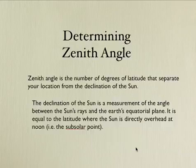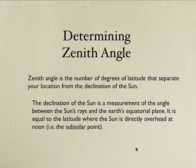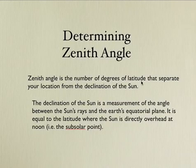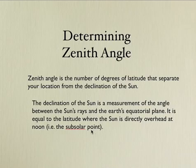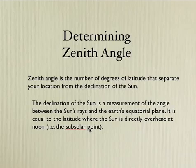We need to determine the zenith angle. The zenith angle is the number of degrees of latitude that separate your location from the declination of the sun. The declination of the sun is a measurement of the angle between the sun's rays and the Earth's equatorial plane. It's equal to the latitude where the sun is directly overhead at noon — in other words, it's the subsolar point. The declination of the sun is basically the same as the subsolar point, which is the latitude where the sun is directly overhead at noon.